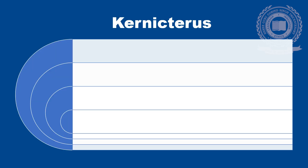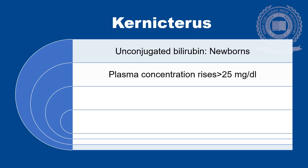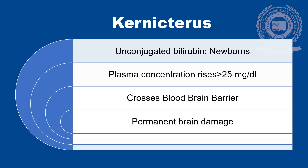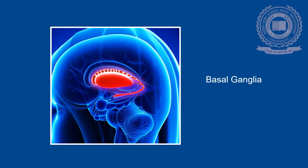Next to discuss is kernicterus. It is the condition seen when unconjugated bilirubin levels are raised in newborns, and especially when plasma concentration rises above 25 mg%. At that level, it crosses the blood-brain barrier and causes permanent brain damage. The most common site where it gets deposited in the brain is the basal ganglia.